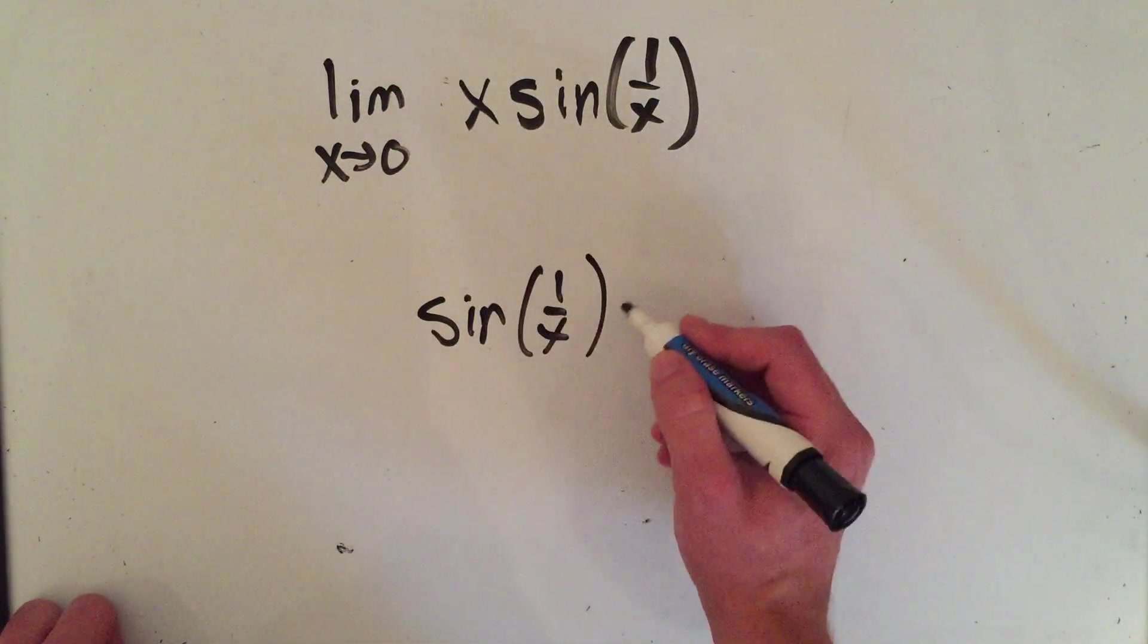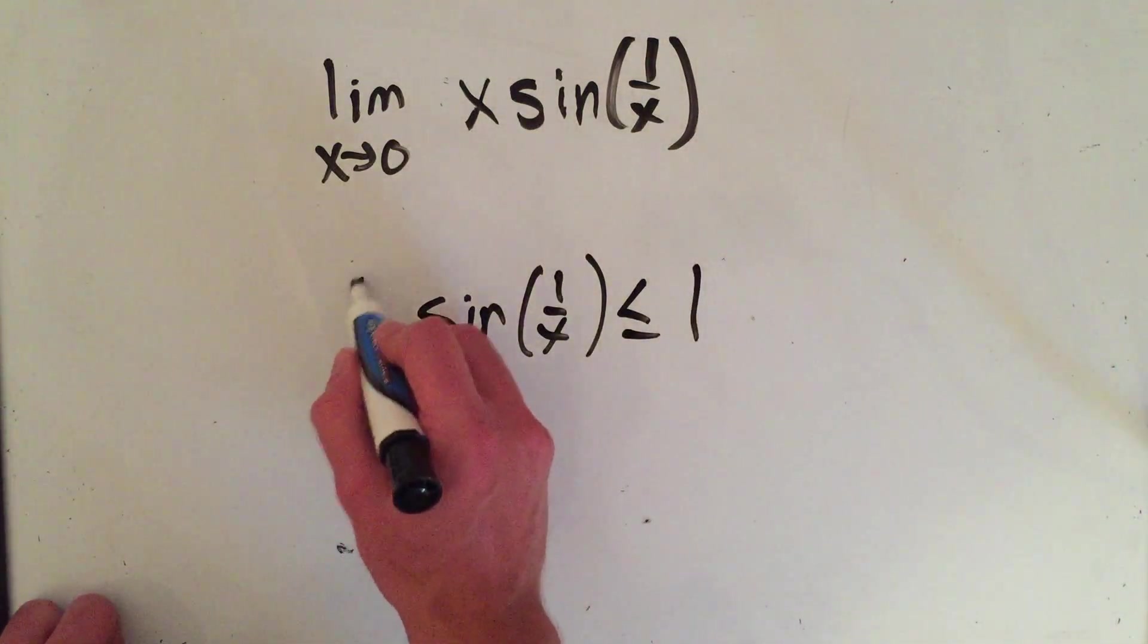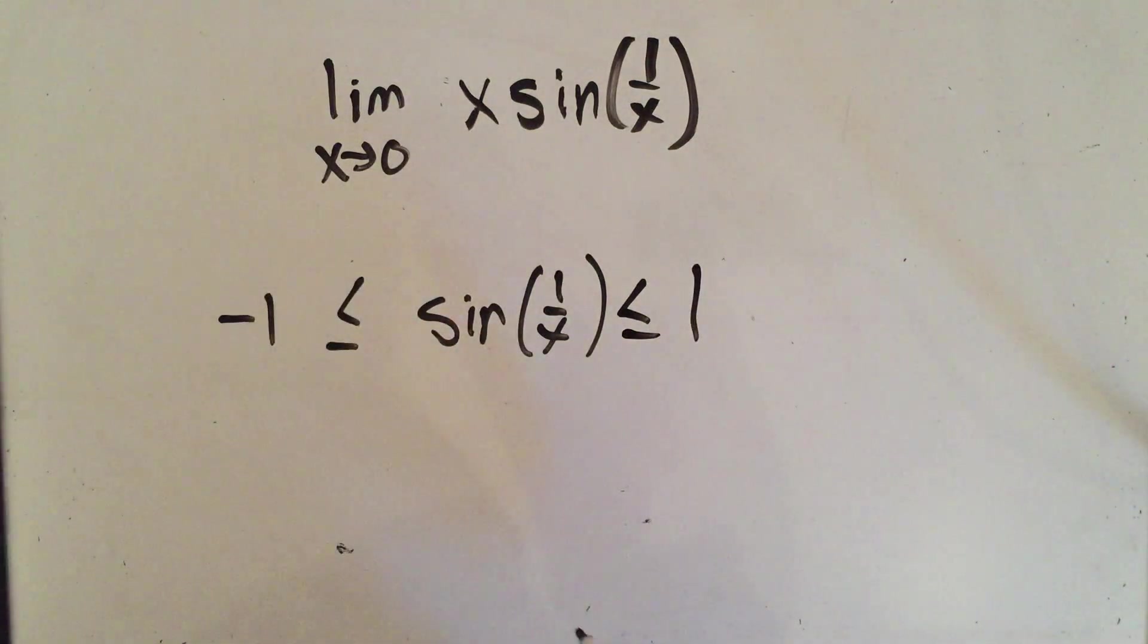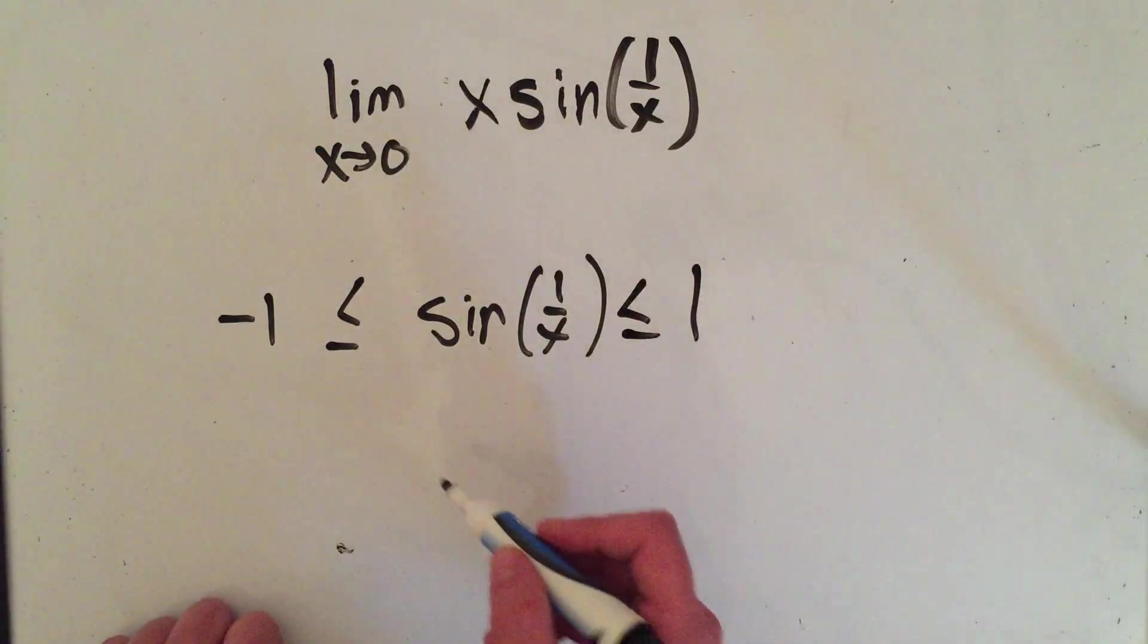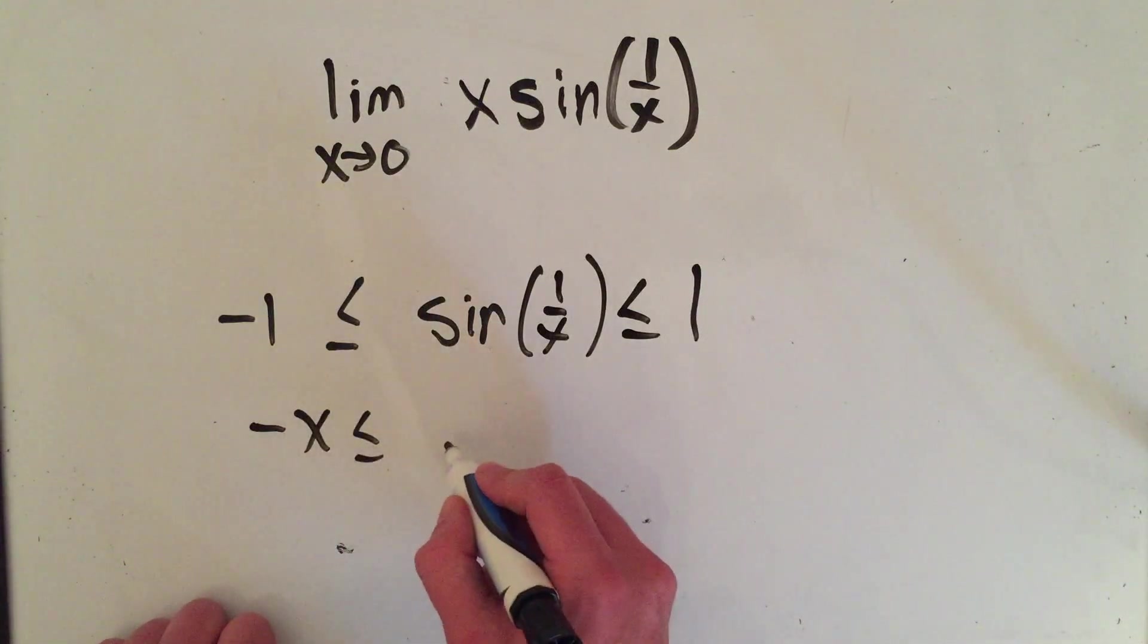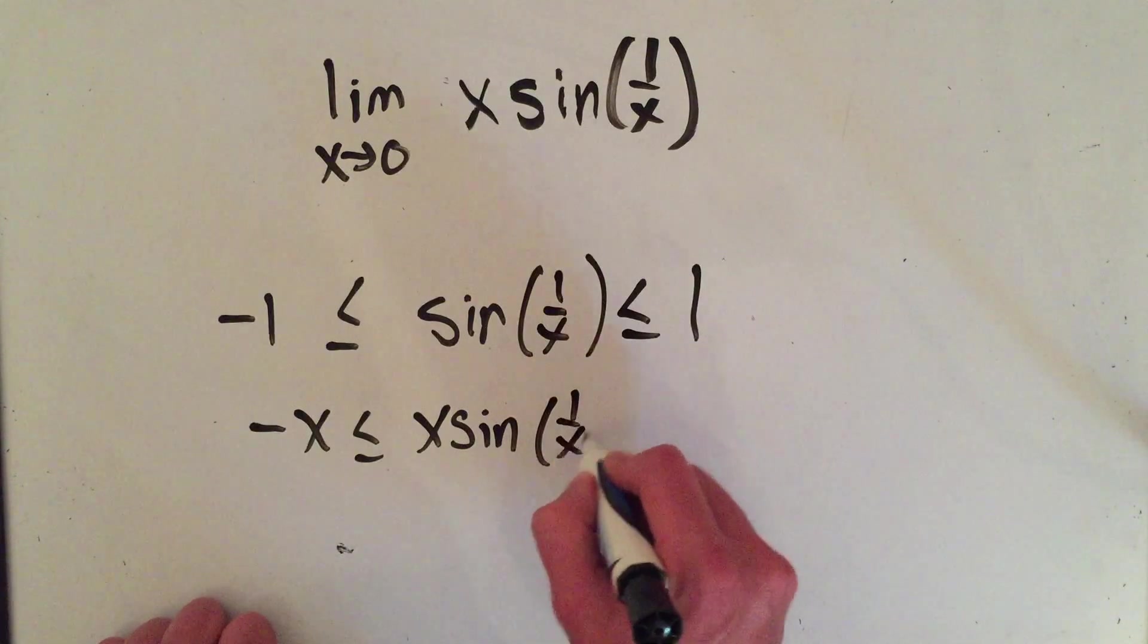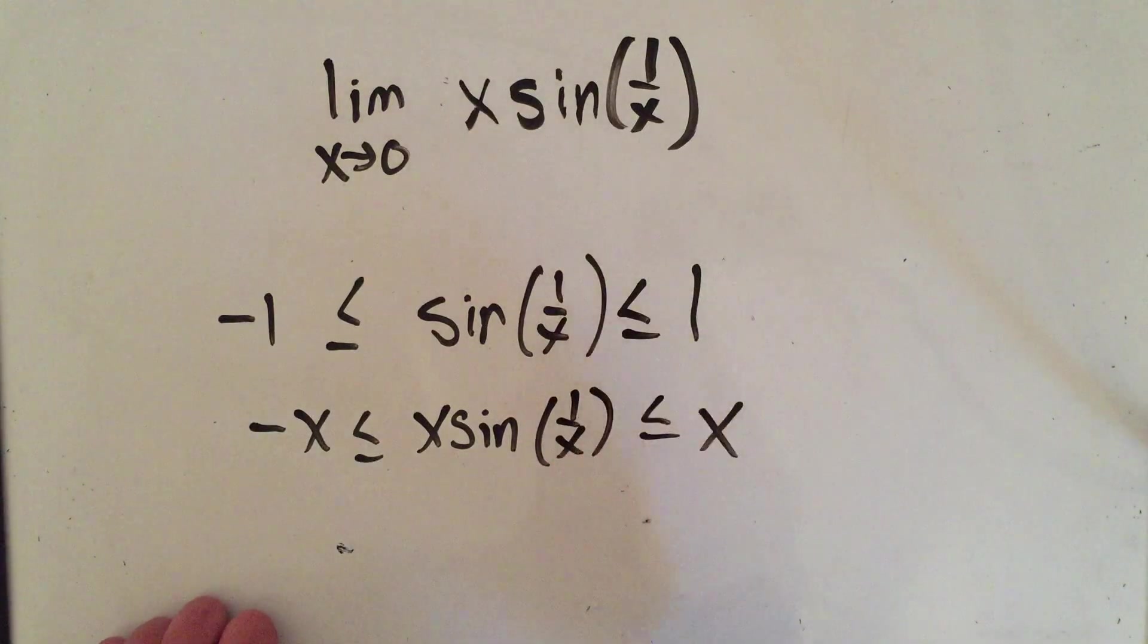Now at most, it doesn't matter what I plug in, the biggest sine can be is 1, and the smallest sine can be is negative 1. And now if I multiply this entire inequality by x, I'd get minus x is less than or equal to x sine of 1 over x is less than or equal to x,